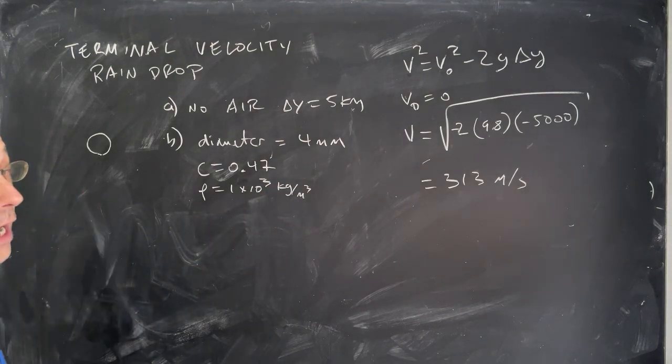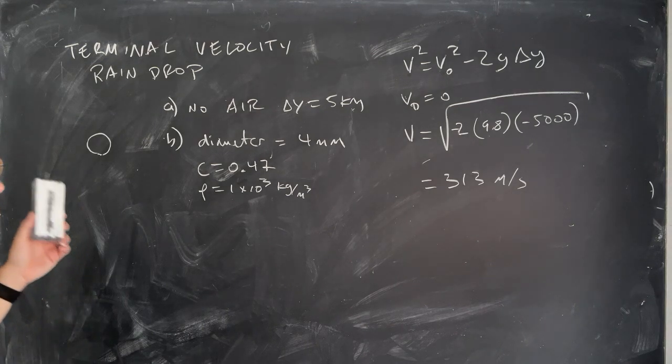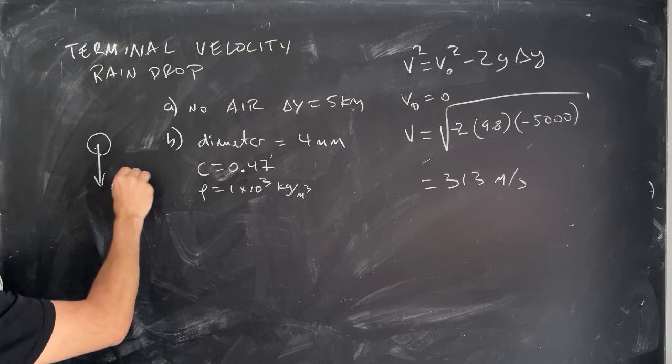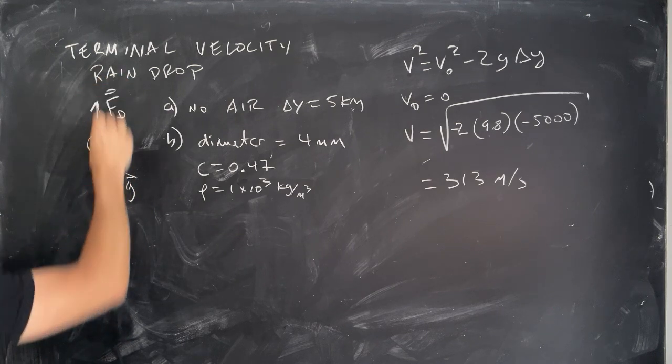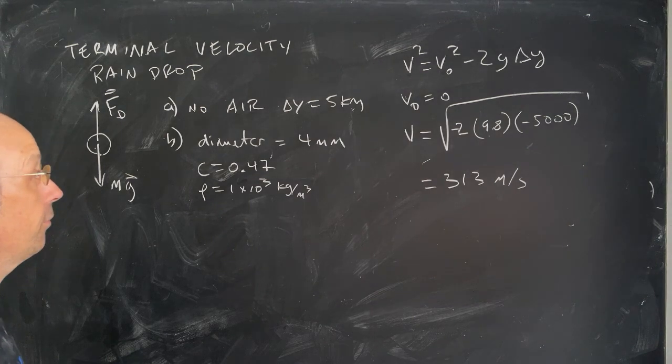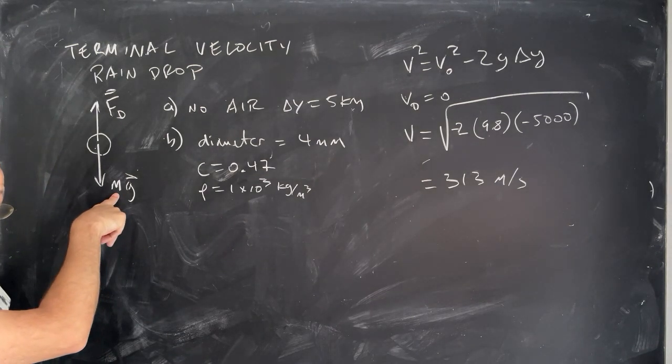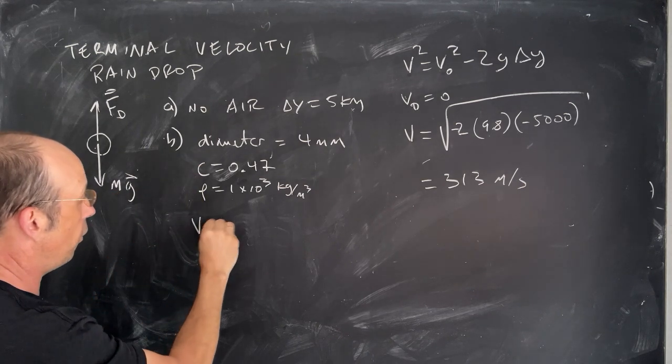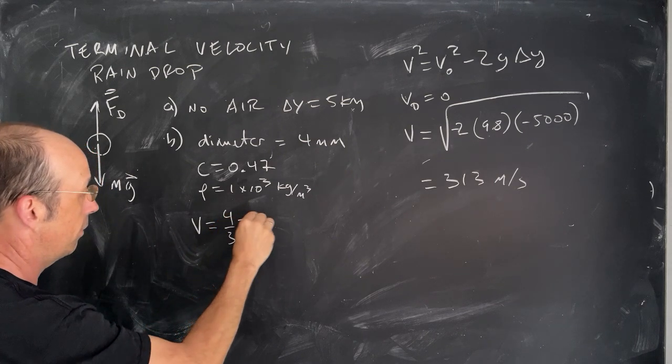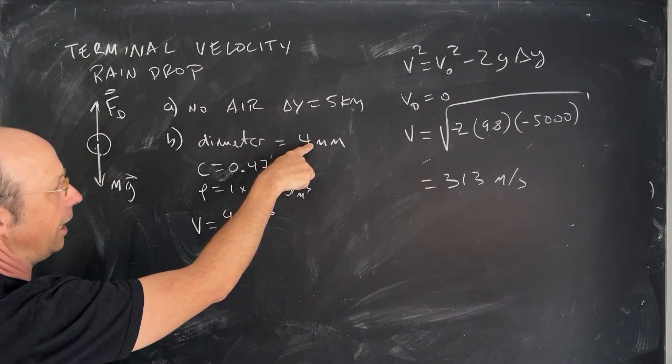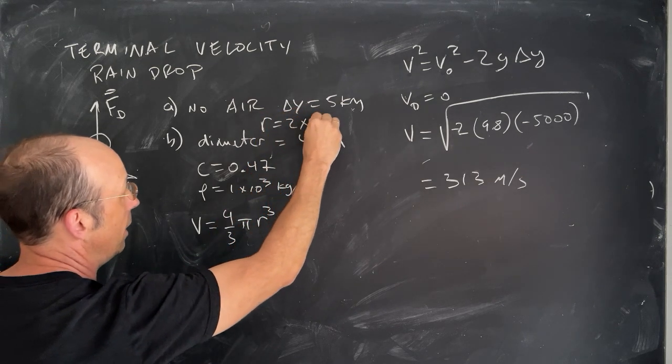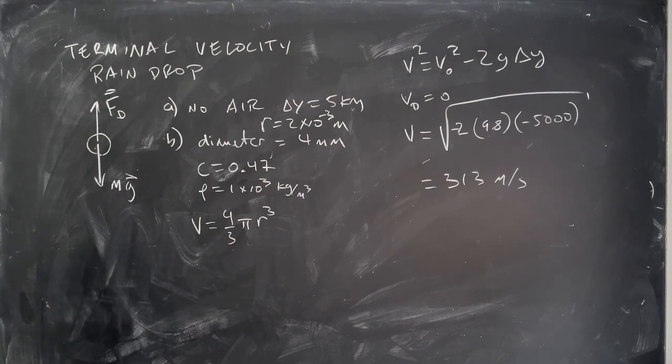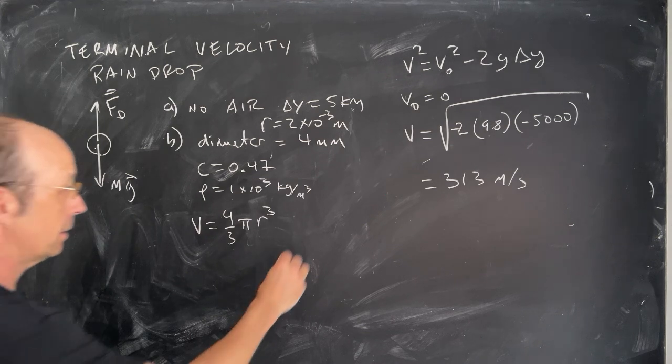It's fine. So if I have a sphere and I want to find the terminal velocity, then I'm going to let it fall until the downward gravitational force, mg, is equal to the upward drag force, Fd. Now I do need to find both of those things, right? Because the mass depends on the density and the volume. So let's go ahead and find the volume. The volume of a sphere is four-thirds pi r cubed. And so if this is the diameter, then r is equal to 2 times 10 to the negative 3 meters. We're going to need that.